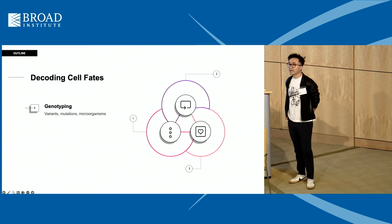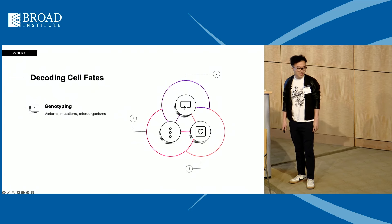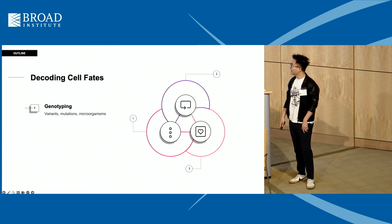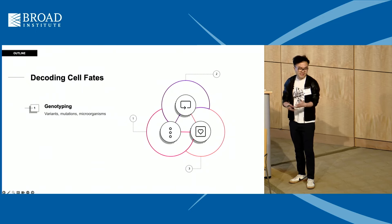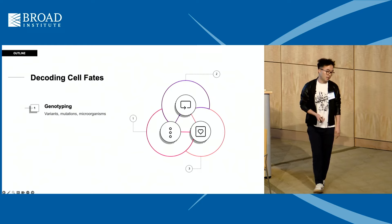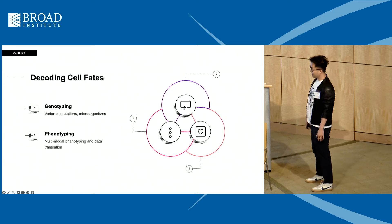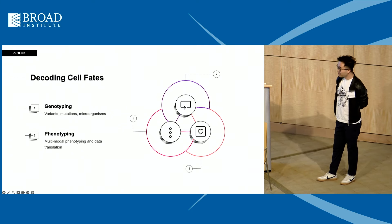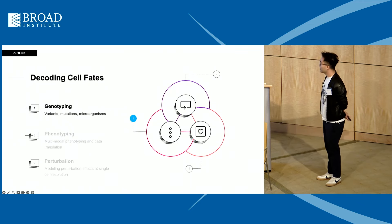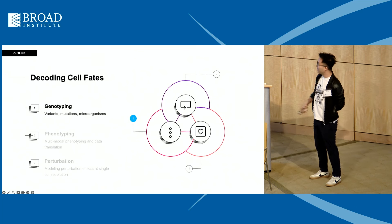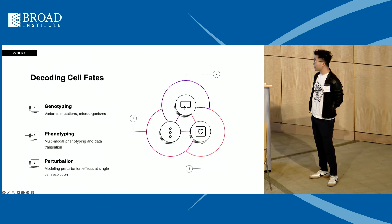Today I'm going to share three small stories about how we think about decoding cell fates. The first is a brief introduction to how we decode the genotype in complex iPSC villages or primary tissues. The second—the main course—is how we do phenotyping through different kinds of imaging methods. And the third is about perturbations and using imaging omics to read out perturbation effects.